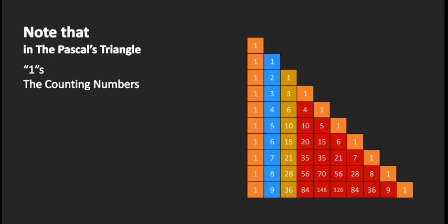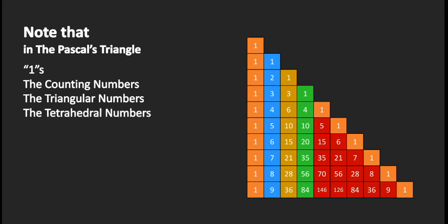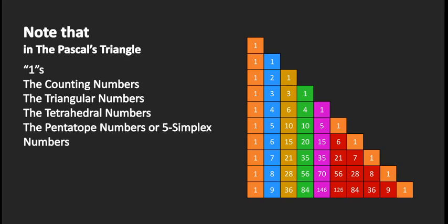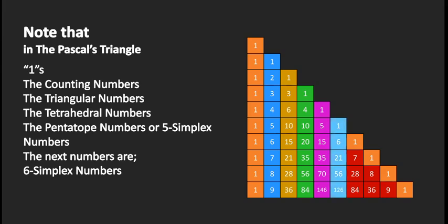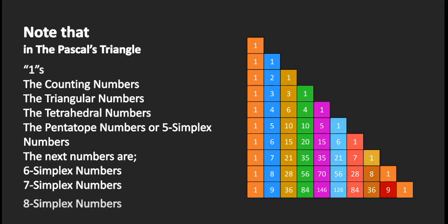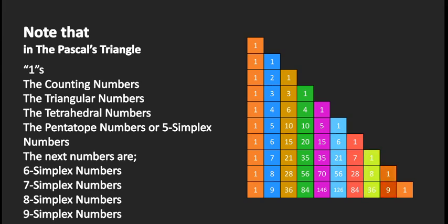The next diagonal contains the triangular numbers, which we have already learned about in this video. The following diagonal contains the tetrahedral numbers. After that come the pentatope numbers, also called 5-simplex numbers — their study is beyond the scope of this video. The subsequent diagonals give the 6-simplex, 7-simplex, 8-simplex, and 9-simplex numbers.